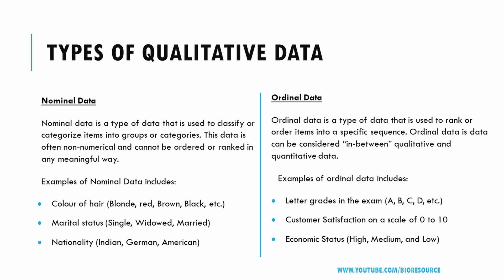Examples of nominal data include color of hair, marital status, nationality, etc. Ordinal data is a type of data used to rank or order items into a specific sequence. Unlike nominal data, which cannot be ranked, ordinal data can be arranged into a specific order or sequence.